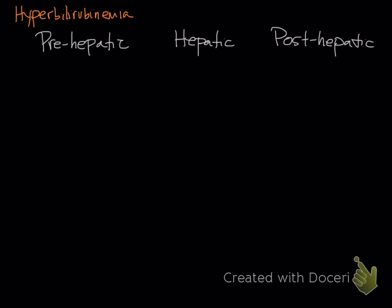So when we see that we have hyperbilirubinemia, the next question you have to ask is kind of similar to when we talked about azotemia, except now we're talking liver.